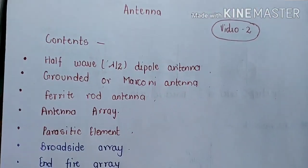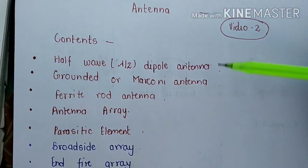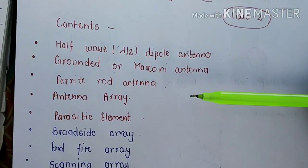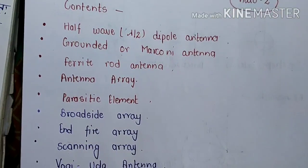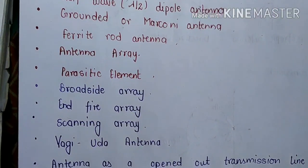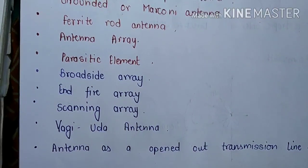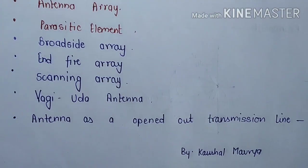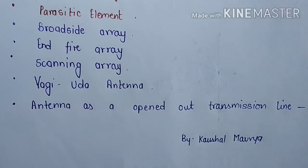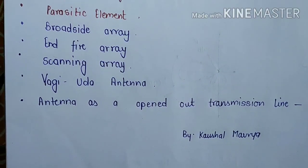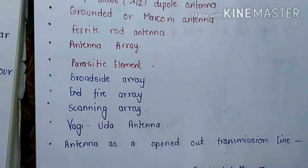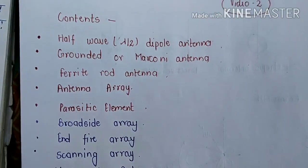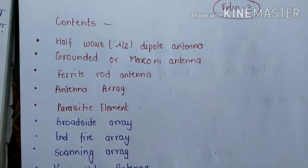Here are the contents of today's video: half wave dipole antenna, grounded or Marconi antenna, ferrite rod antenna, antenna arrays, parasitic element, broadside array, end-fire array, scanning array, Yagi-Uda antenna, and antenna as an open-out transmission line.